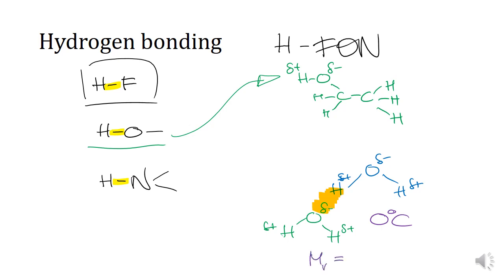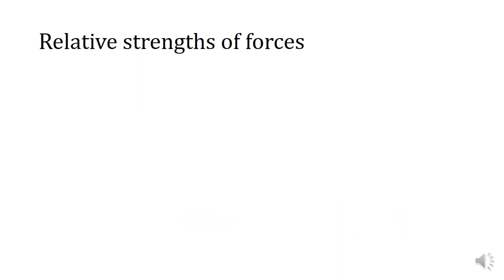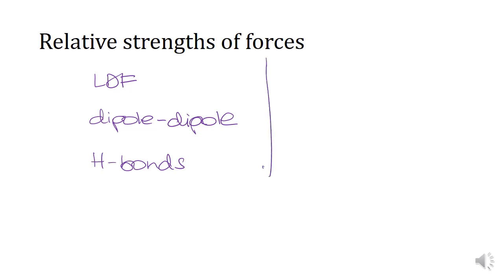Water has a melting point of zero degrees Celsius and a molecular mass of approximately 18. Methane, however, has a melting point of negative 182 degrees Celsius. As we've been discussing, the rough order of intermolecular force strength starts with LDF (instantaneous dipoles), then dipole-dipole, then hydrogen bonds — moving from weak to strong.